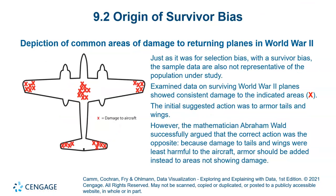When World War II planes were examined, the data showed consistent damage to certain indicated areas. The initial suggestion was to armor the tails and wings, but mathematician Abraham Wald argued the opposite — damage to tails and wings was least harmful to the aircraft, so armor should be added to the areas not showing damage.